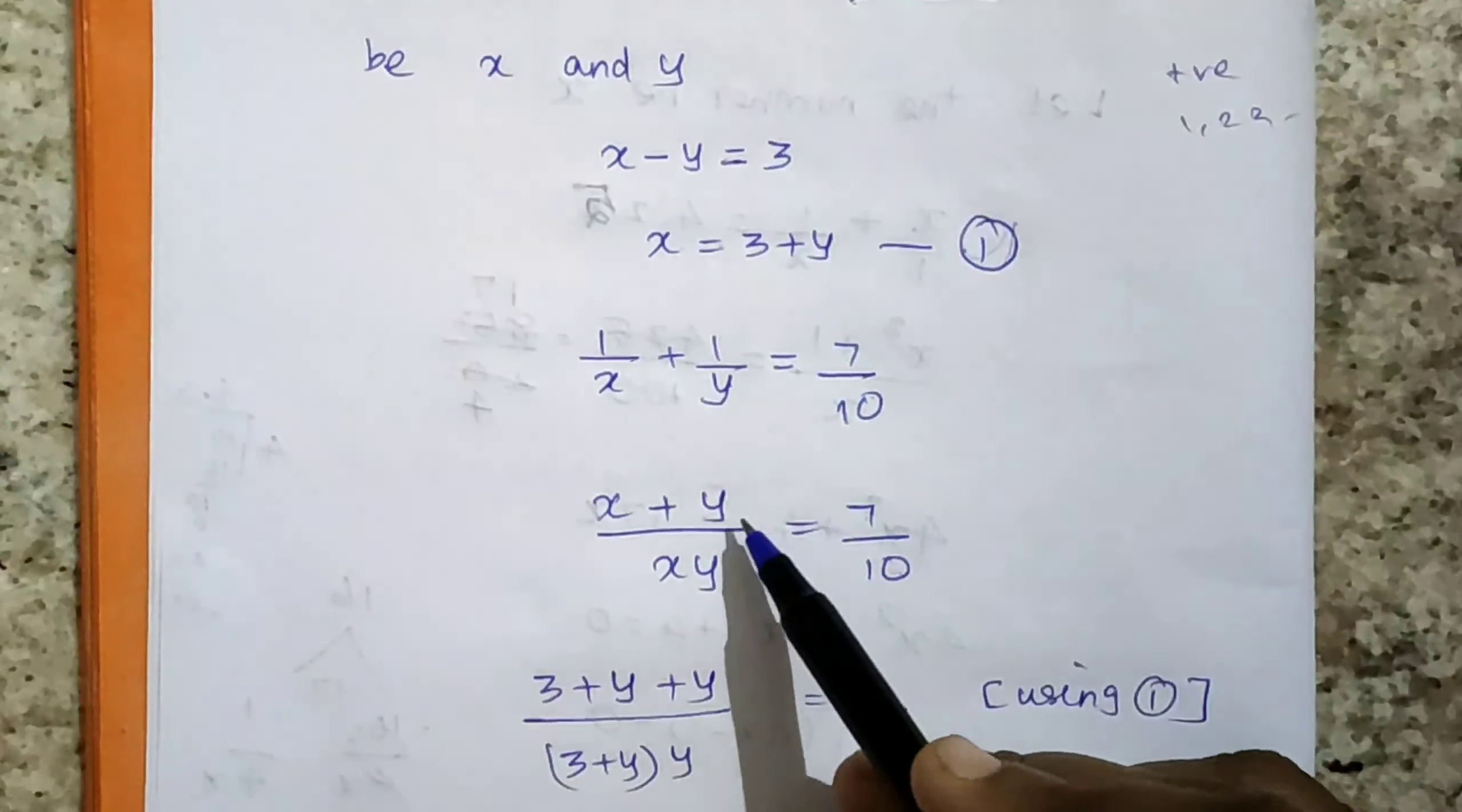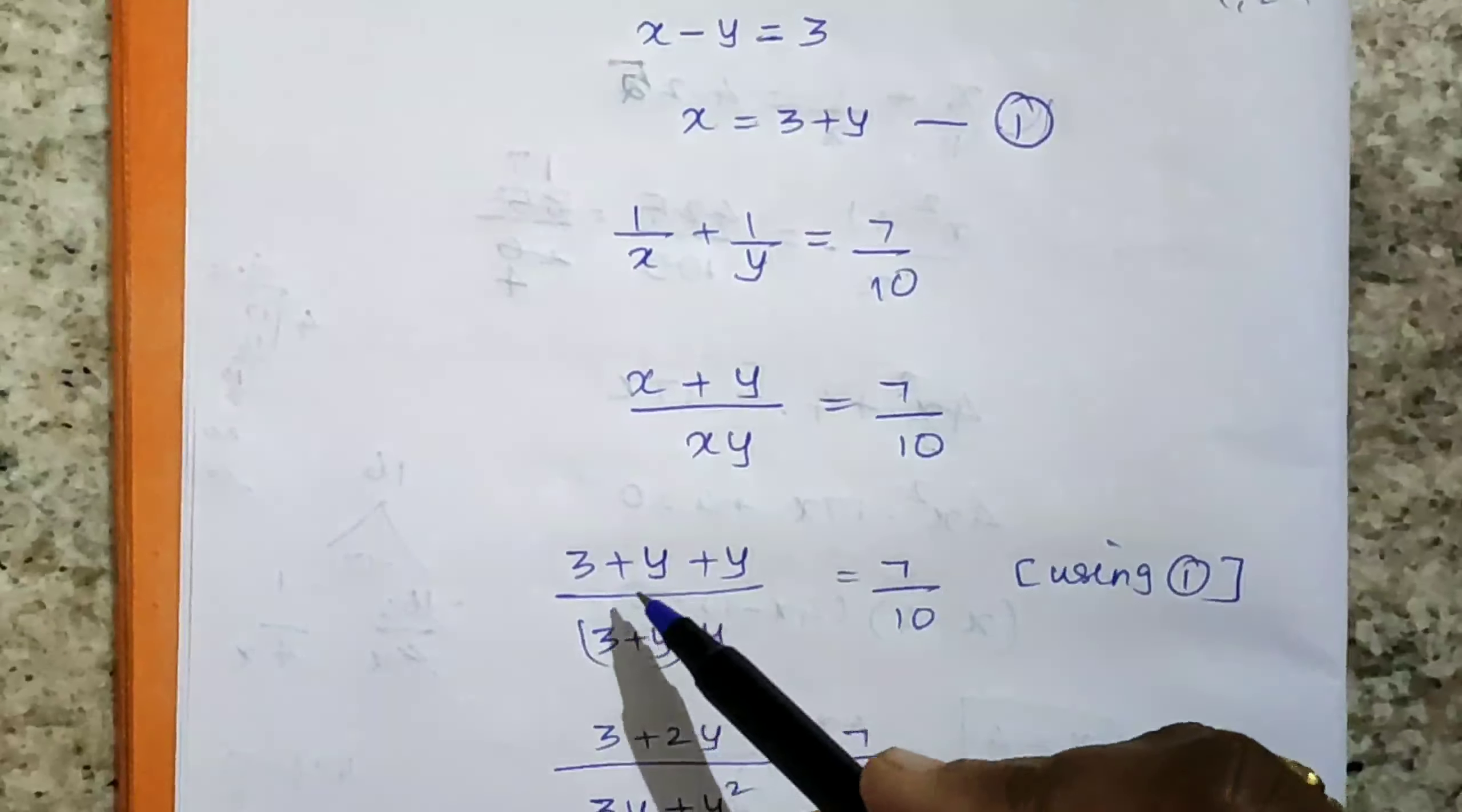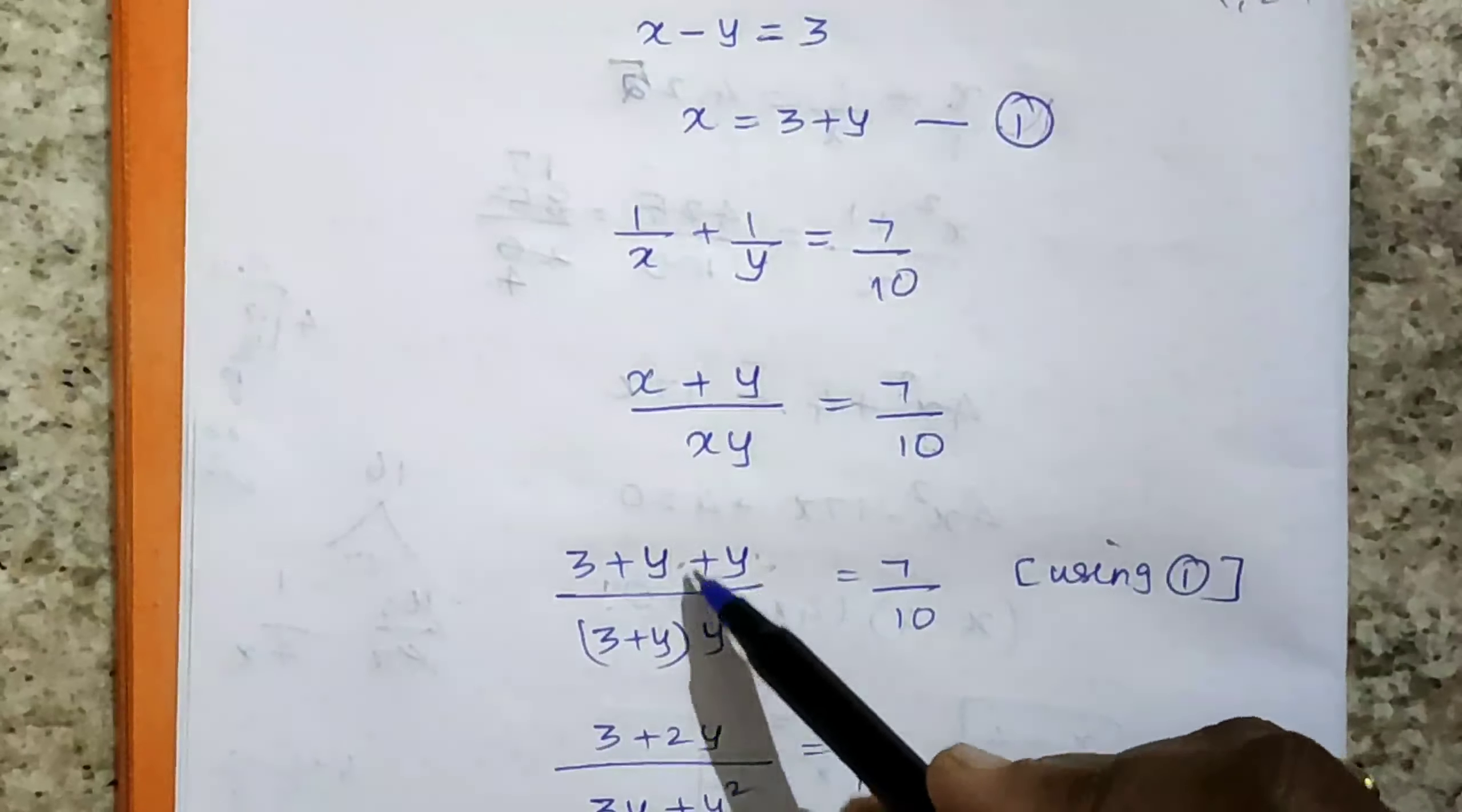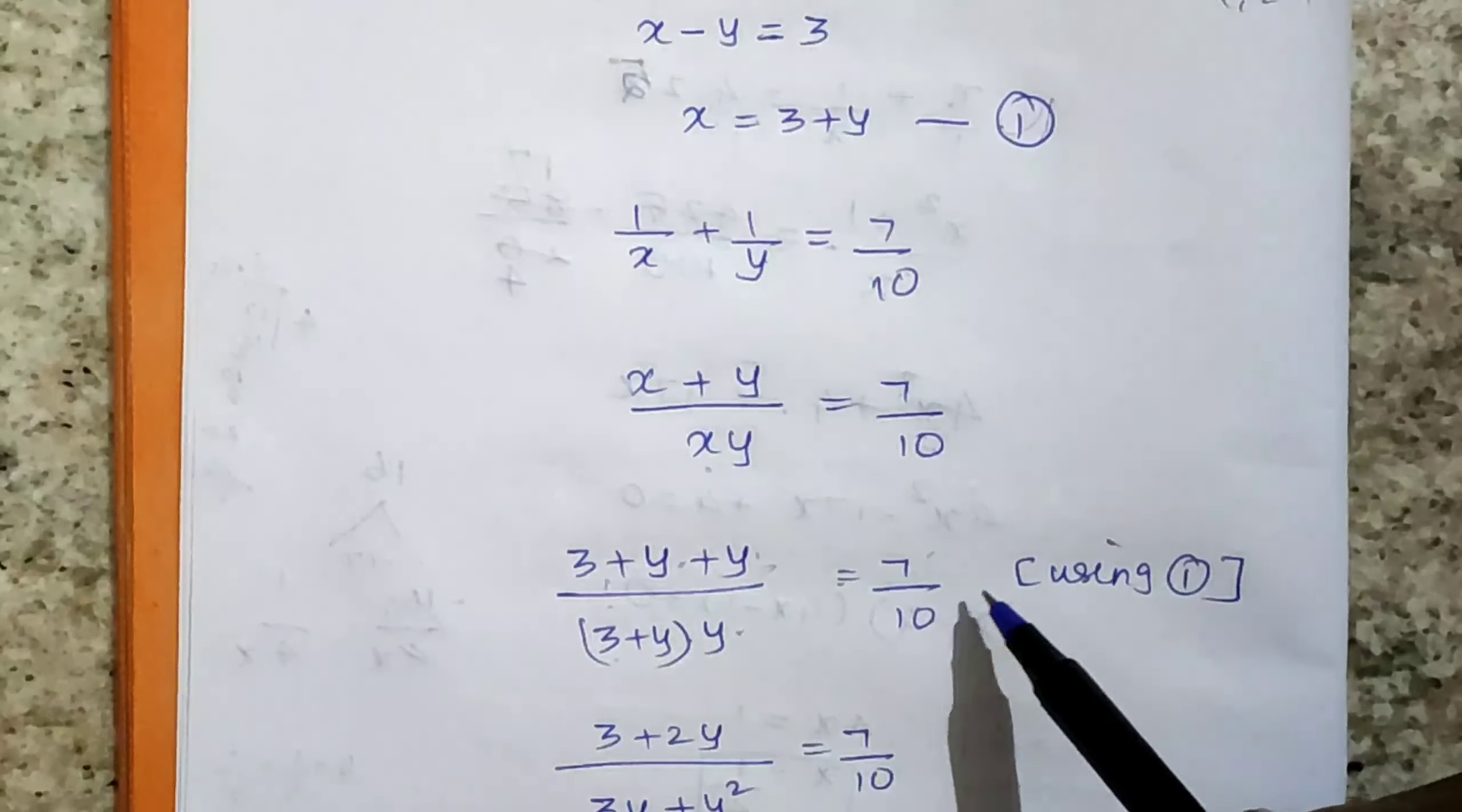Now substitute x value 3 plus y in here. So 3 plus y plus y over, instead of x, substitute 3 plus y times y, equals 7/10.